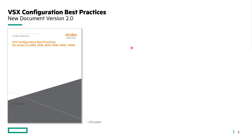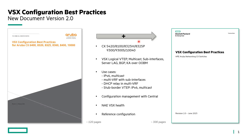There are more platforms which are VSX capable, like the recently announced CX 10,040. There are more features not addressed in the previous edition, such as VSX keep-alive over management port and sub-interfaces. There are more use cases like IPv6, multicast, DHCP in multi-VRF context, border and stub VTAP in the external fabric with IPv6 and multicast. There are also interesting topics addressed like VSX sync and management with SoundHall, or NAE monitoring of the VSX health.